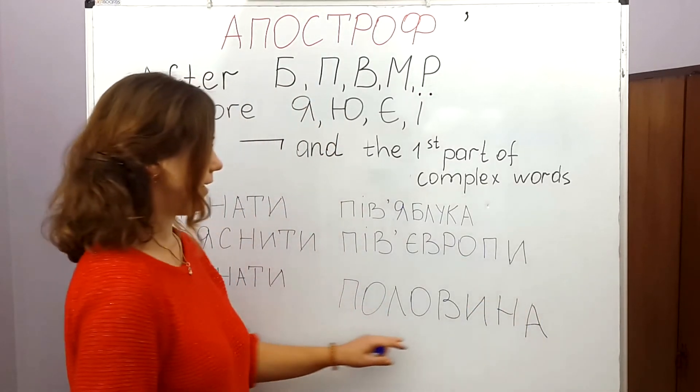З'єднати. З'єднати. З'єднати. З'єднати means to join something or someone. So here we have an apostrophe.